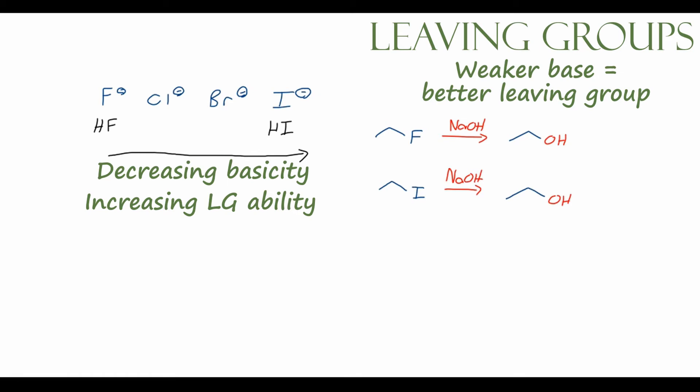And if we compare the rates of these two reactions, we find out that the second reaction, with iodine as the leaving group, is much faster. And that tells us that iodine is a better leaving group than fluorine, because it is a weaker base, and because of that weak basicity, it is much more willing to come off and exist in solution as I⁻, whereas F⁻ is not as willing to exist by itself in solution, and therefore forms a much stronger bond with the carbon in fluoroethane.